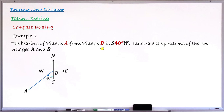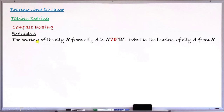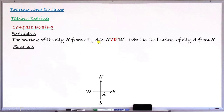Let me take one more example. Example 3 says: the bearing of CTB from CTE is N70°W. The question asks: what is the bearing of CTE from CTB? In other words, if we have the bearing of B from A, what will be the bearing of A from B? Let me mark the position of A first. This is my position A with the four major cardinal points.